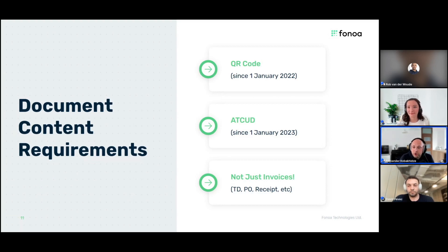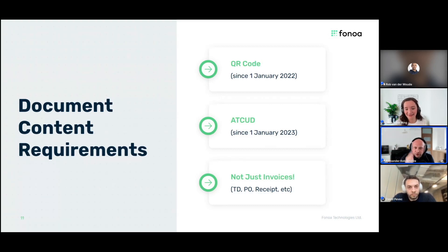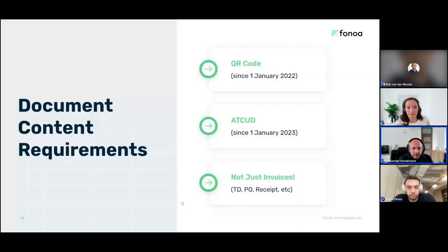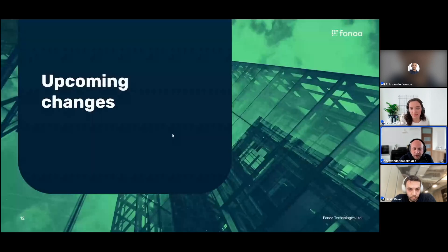The ATCUD must appear right before the QR code. The QR code can appear on the first or last page, but the ATCUD must appear on each and every page — so if you have a three-page document, you need the ATCUD code on each page. This is important to look into carefully if you're considering building this in-house.